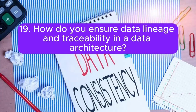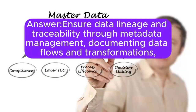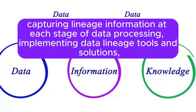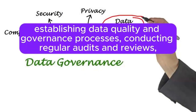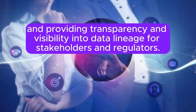Question 19: How do you ensure data lineage and traceability in a data architecture? Data lineage and traceability are ensured through metadata management, documenting data flows and transformations, capturing lineage information at each stage of data processing, implementing data lineage tools and solutions, establishing data quality and governance processes, conducting regular audits and reviews, and providing transparency and visibility into data lineage for stakeholders and regulators.